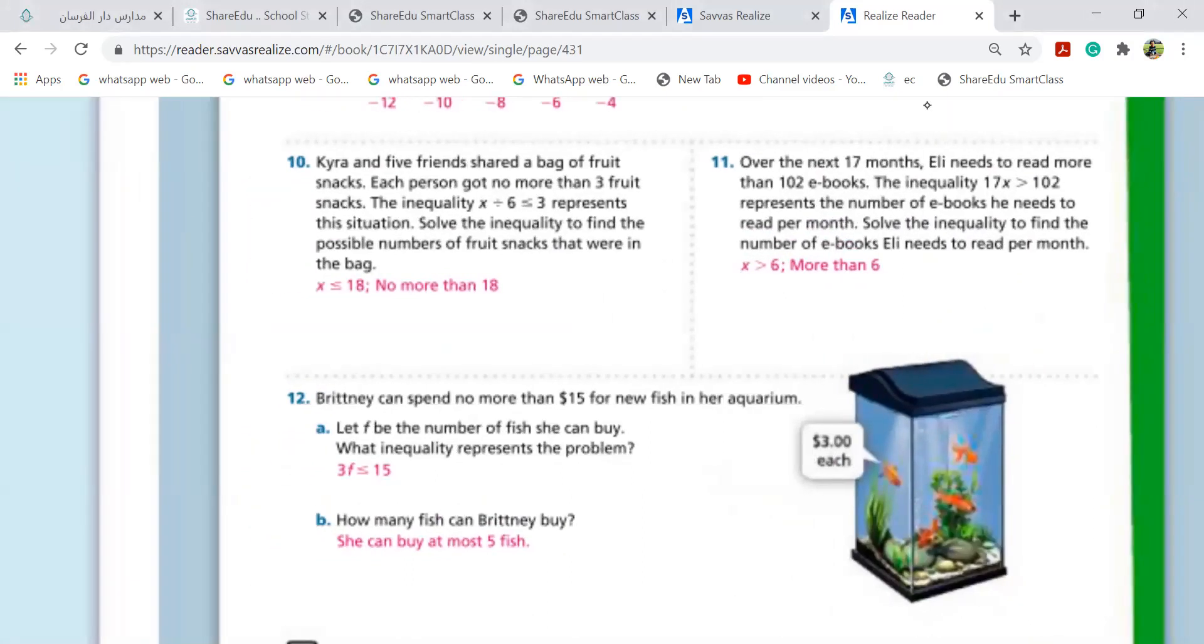Zechira and five friends shared a bag of fruit snacks. Each person got no more than three fruit. X divided by six, not more than three fruit. Has to be three or less than three. So X over six is less than or equal to three. This is question number 10. So X will be three times six. So no more than 18. No more than 18.